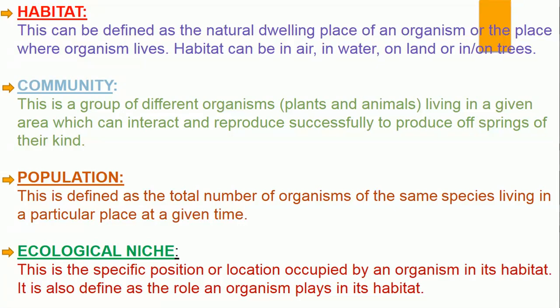The next concept is population. Population is defined as the total number of organisms of the same species living in a particular place at a particular time. The way we define population in biology is a little different from geography or economics. The key terms here are 'total number of organisms' and 'same species.'